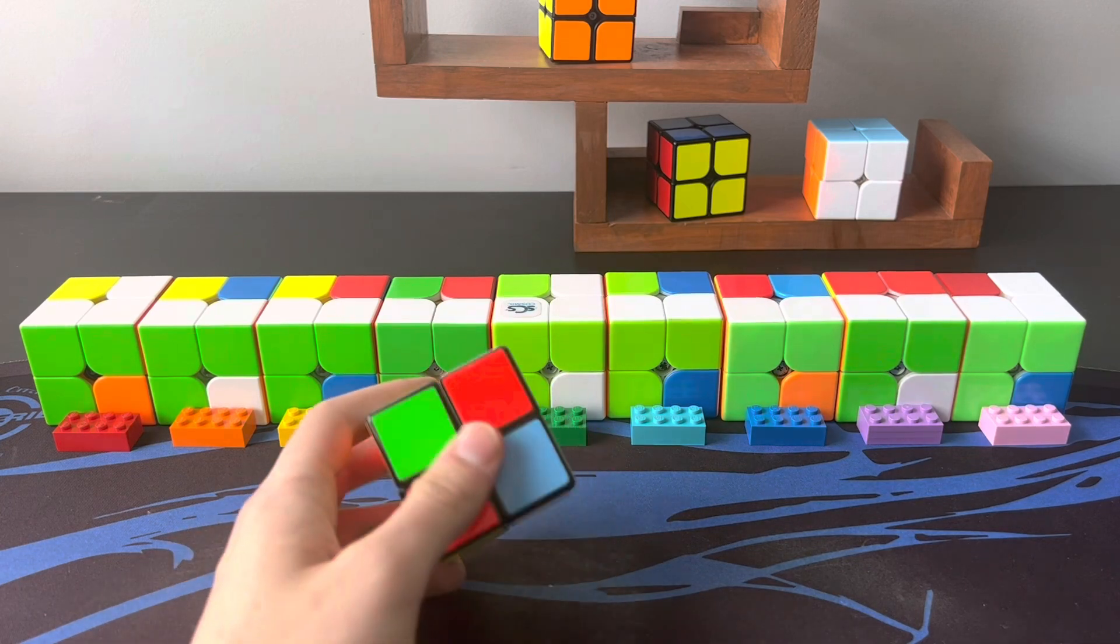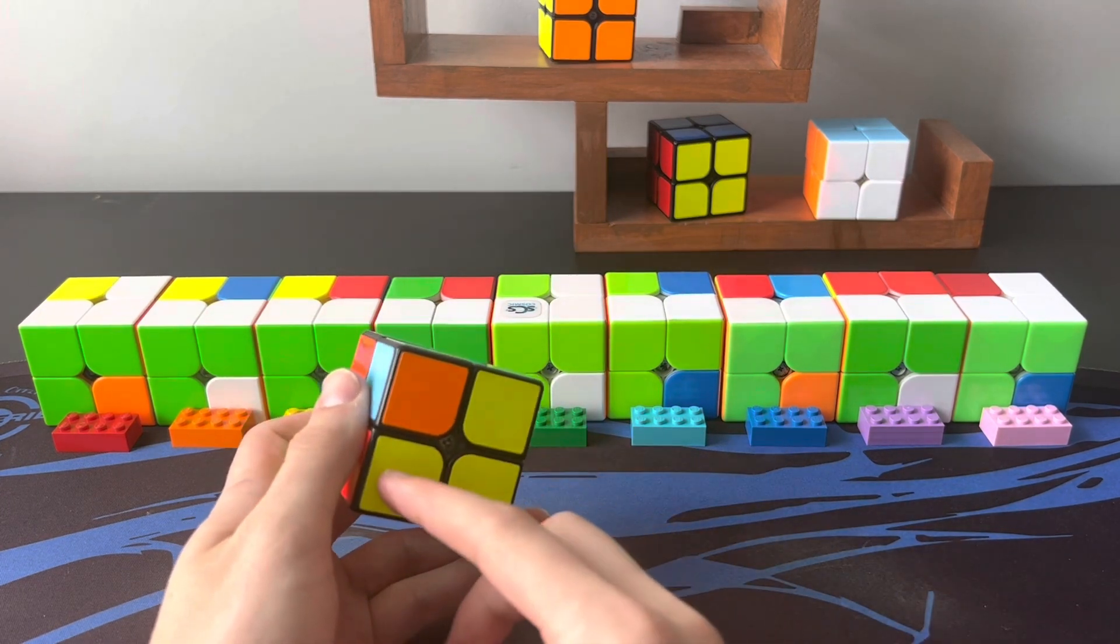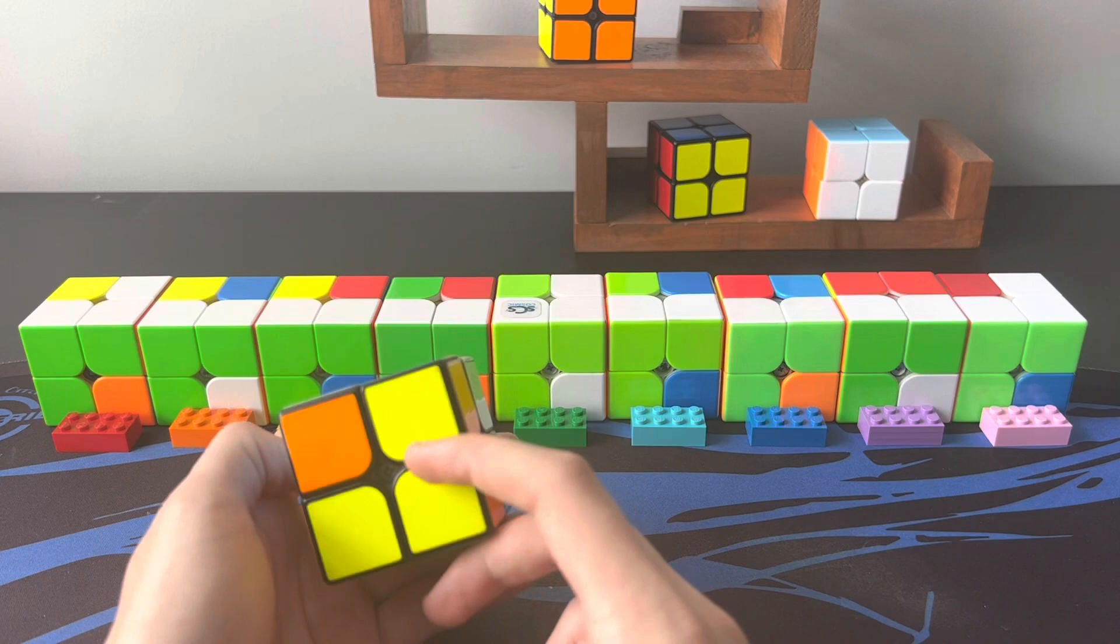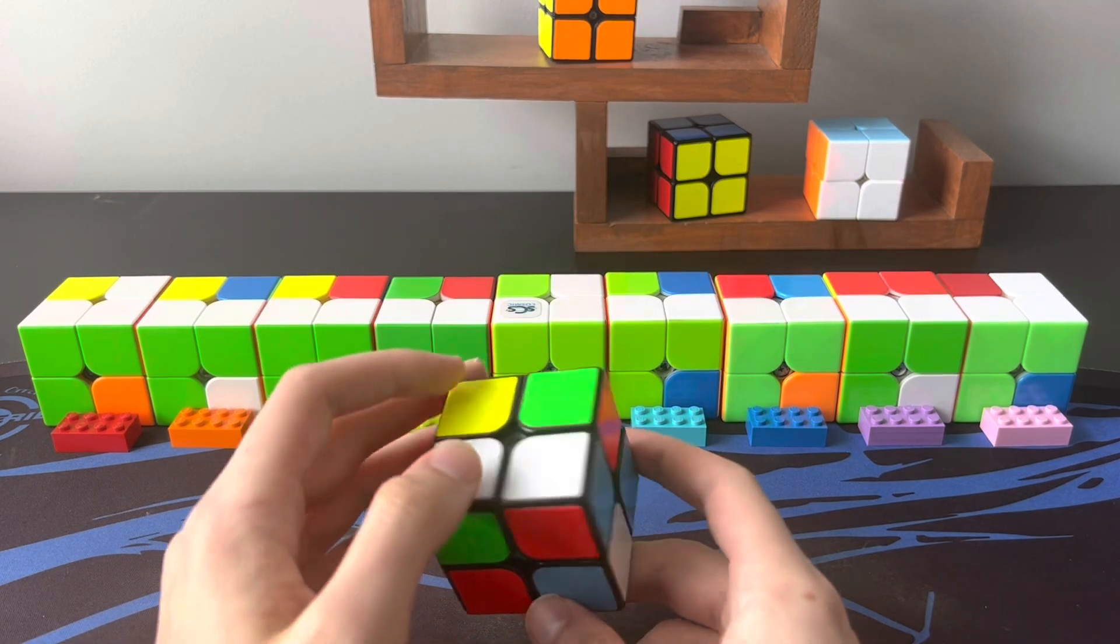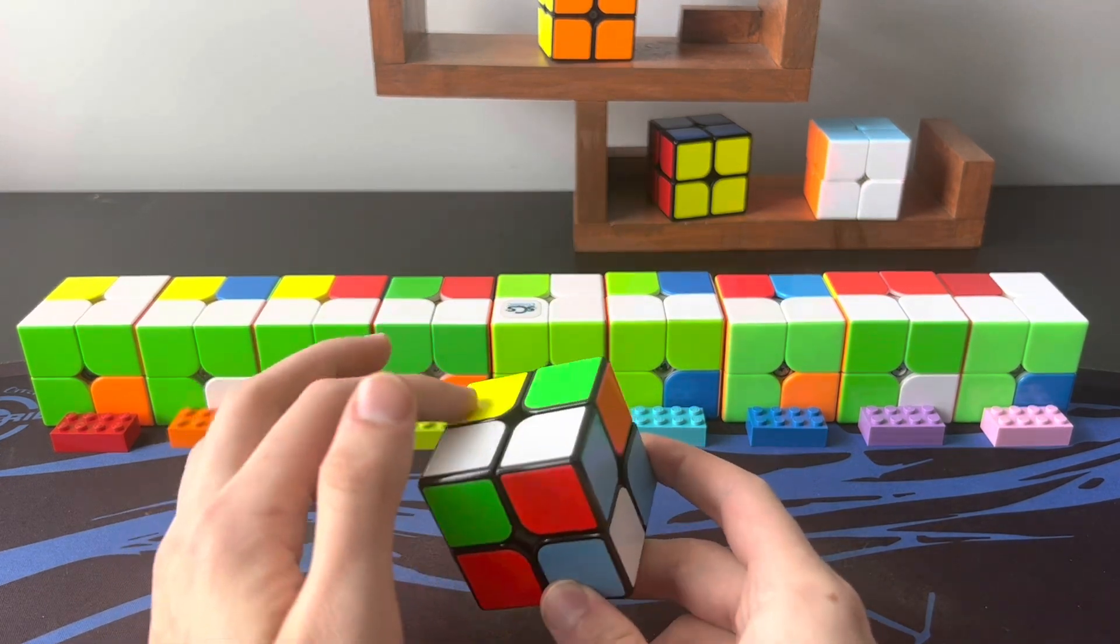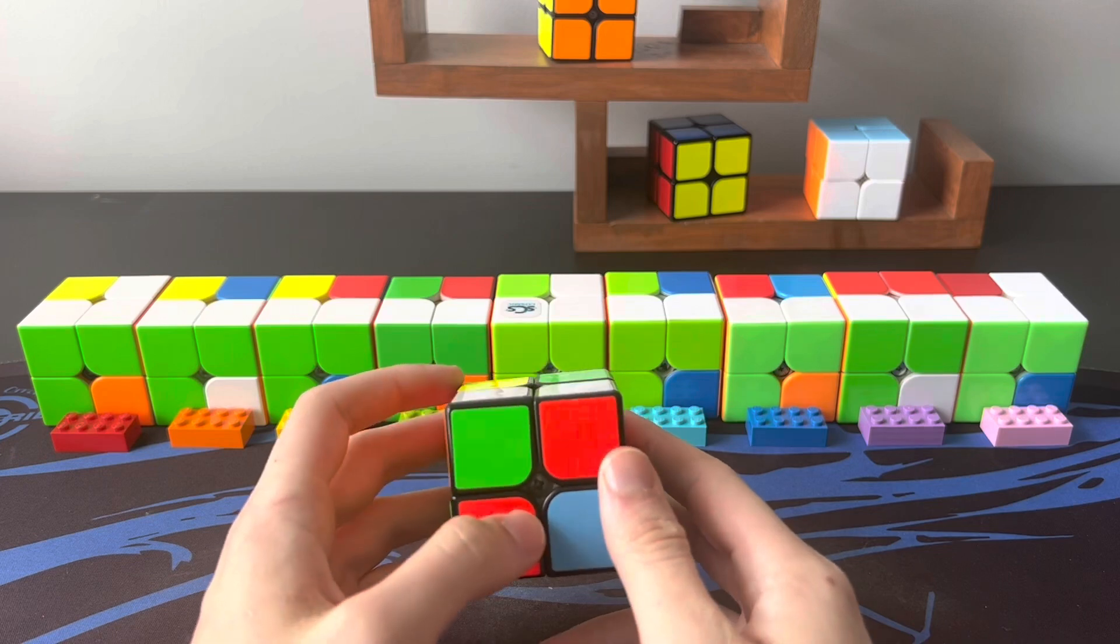The LS method is a 2x2 method where you solve three fourths of a layer instead of a full layer, as we can see here on yellow, and the last corner is going to be somewhere in the top layer. From there we just solve it in one algorithm.